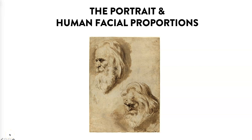Rubens is observing the head positions. At the top we have a three-quarter angle of the head. At the bottom right corner, we see a head position that's facing downward. He's really paying attention to the details on the features — the individual characteristics of the nose, eyes, hair, and in particular the head positioning.